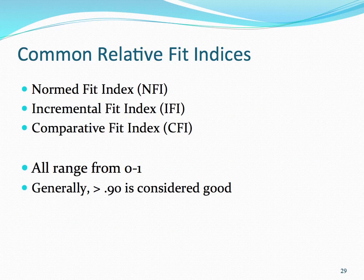The second class of model fit indices is that of relative fit indices. These fit indices involve comparing the theoretical model to a baseline model — the null or independence model — which looks at a model with no relationships among variables. So these fit indices determine whether our specified model is better than a model where there are no relationships between variables. The most commonly reported relative fit indices are the norm fit index (NFI), the incremental fit index (IFI), and the comparative fit index (CFI). For all three, values range from 0 to 1, and generally values greater than 0.90 suggest a good fitting model.